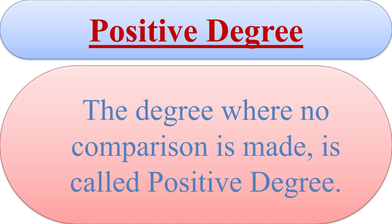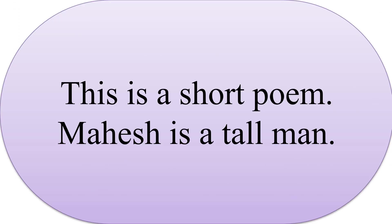Positive degree: The degree where no comparison is made is called Positive degree. For example: 'This is a short poem' and 'Mahesh is a tall man.' In these sentences, 'short' and 'tall' describe the quality of 'poem' and 'man'. Here, no comparison is made. So, they are in Positive degree.